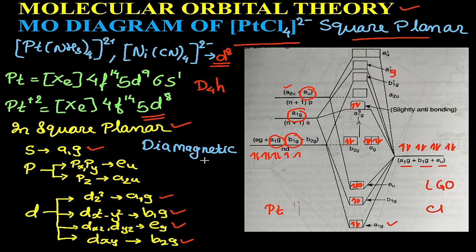So this is the MO diagram for PtCl₄, and this is the sigma bonding MO diagram of PtCl₄. We are not concerning about pi bonding; this is only sigma bonding MO diagram. Thank you.